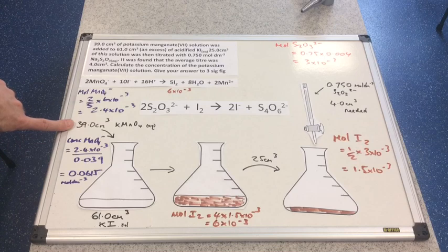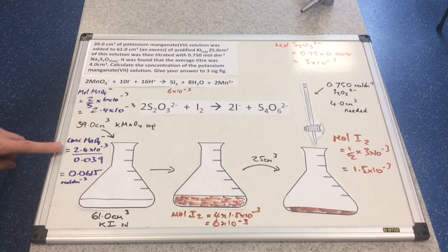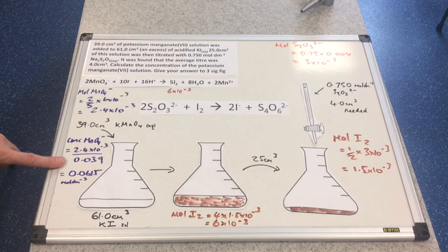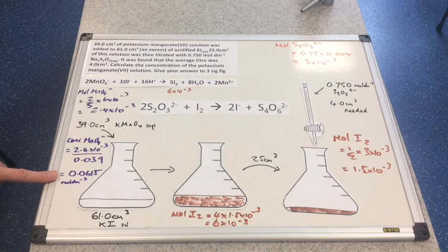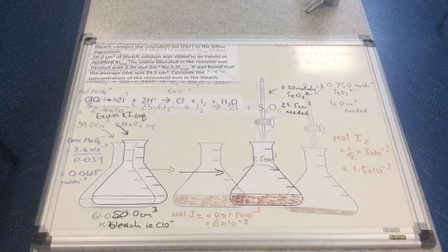The concentration of the KMnO4 solution is calculated as moles divided by volume in dm³. To three significant figures, that comes out at 0.0615 mol dm⁻³.